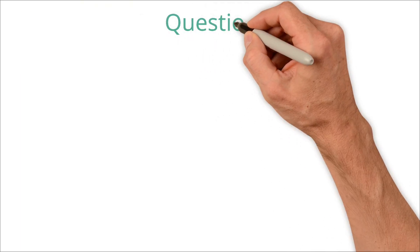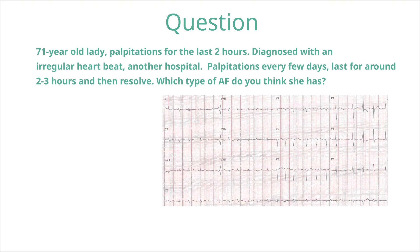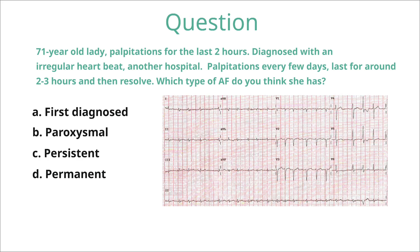A 71-year-old lady presents to the emergency department with palpitations for the last two hours. She has been diagnosed with an irregular heartbeat previously, and reports palpitations every few days that last around two to three hours and then resolve spontaneously. Her ECG confirms AF. This lady has paroxysmal AF — the episodes come and go on their own and last for a period of hours, which is characteristic of paroxysmal AF.